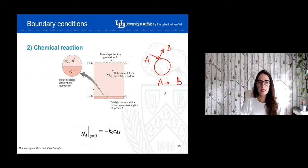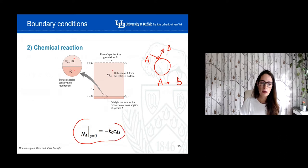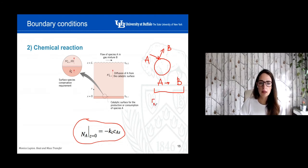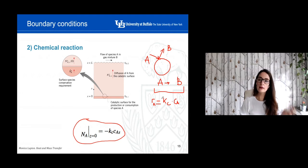In this case, as a boundary condition, we can use the molar flux of element A as a function of the chemical reaction happening — as a function of the kinetics. Depending on how this reaction is defined and the order of the reaction, the rate can be something like a constant K_c times the concentration. Depending on the order, we're going to find different forms to calculate or express this chemical reaction happening over the surface of the catalyst.